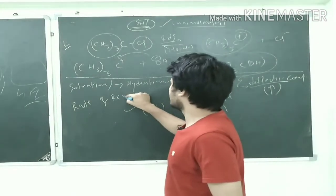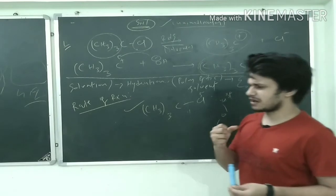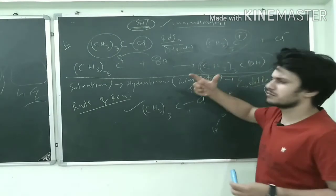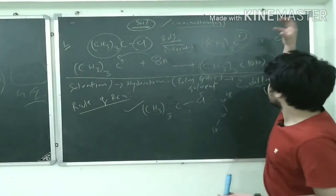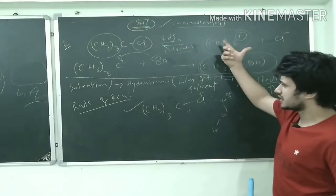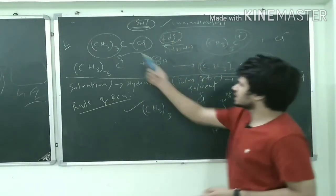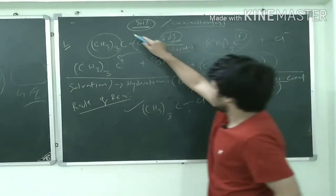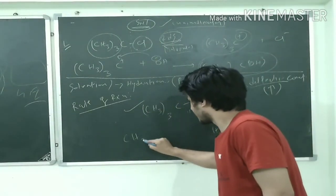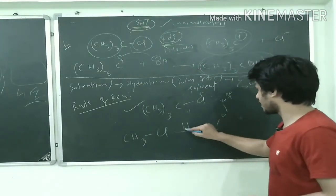Now how to determine the rate of reaction? Very simple - rate of reaction is totally based upon the fact that how much is the stability of this carbocation formed. Because if carbocation is more stable, then the RDS is quickly completed. If it is stable carbocation, then this step doesn't take much time. So the reaction will proceed forward if the carbocation is stable.